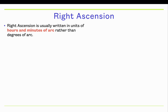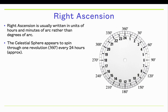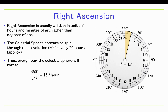Right ascension is usually written in terms of hours and minutes of arc instead of degrees. The Earth spins on its axis once every 24 hours. Instead of measuring right ascension in degrees from zero to 360, astronomers choose to measure it from zero to 24 hours. If you were to go outside and look at stars on the meridian, if you wait an hour, those stars will appear to rotate through the sky by 15 degrees — because 360 degrees divided by 24 hours gives a rate of 15 degrees per hour.